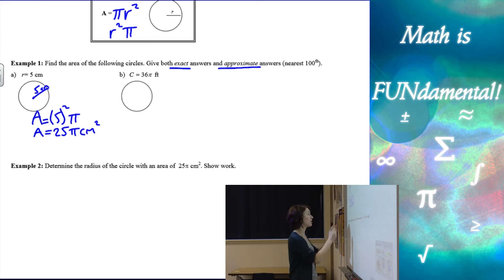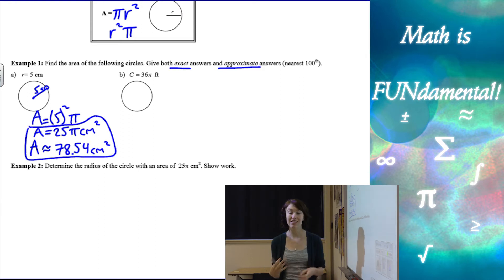So my exact answer is 25 pi centimeters squared for area. Approximate answer is when we take and plug 25 and multiply it by pi in our calculators, and we'll get approximately 78.54 centimeters squared. So exact answers will have pi still in the answer. Approximate will just be a decimal answer.